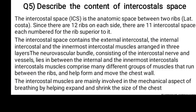Question number five: describe the contents of the intercostal space. The intercostal space is the anatomic space between two ribs. Since there are 12 ribs on each side, there are 11 intercostal spaces, each numbered for the rib superior to it.